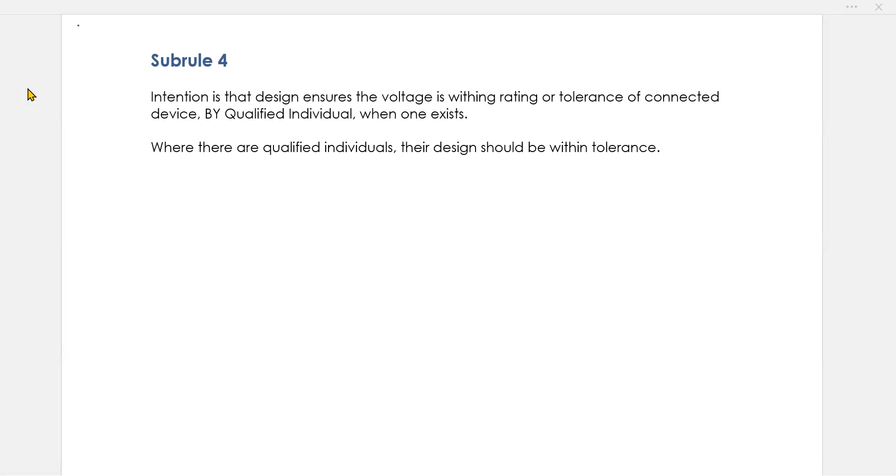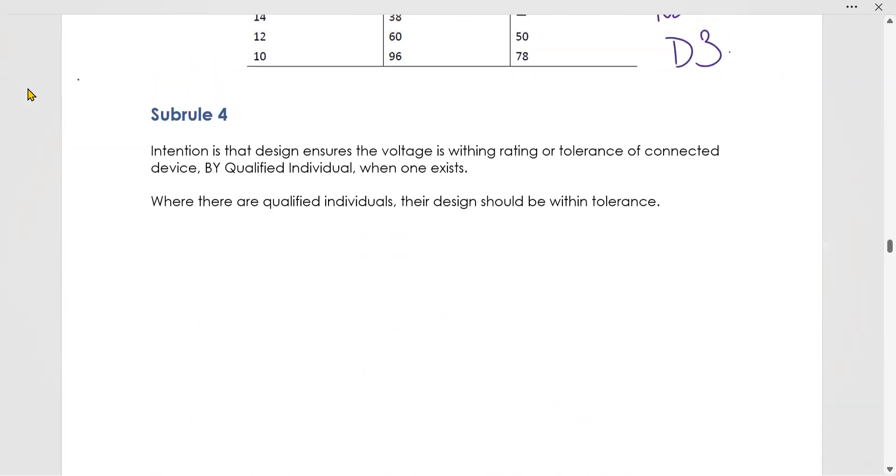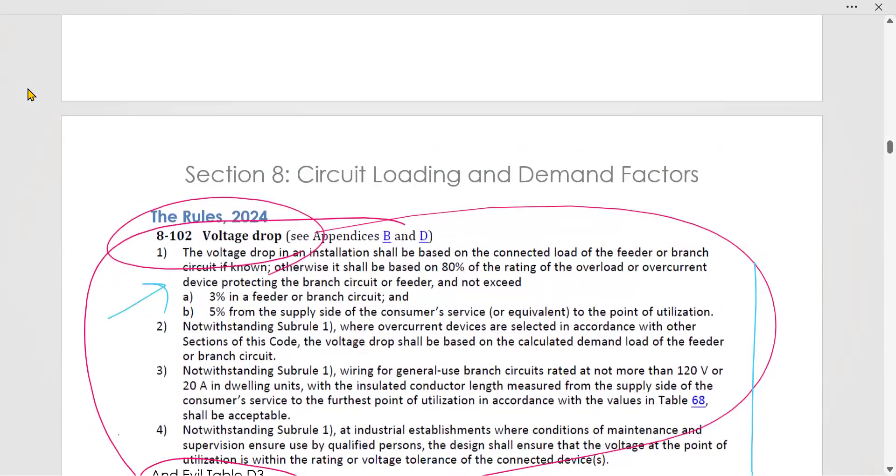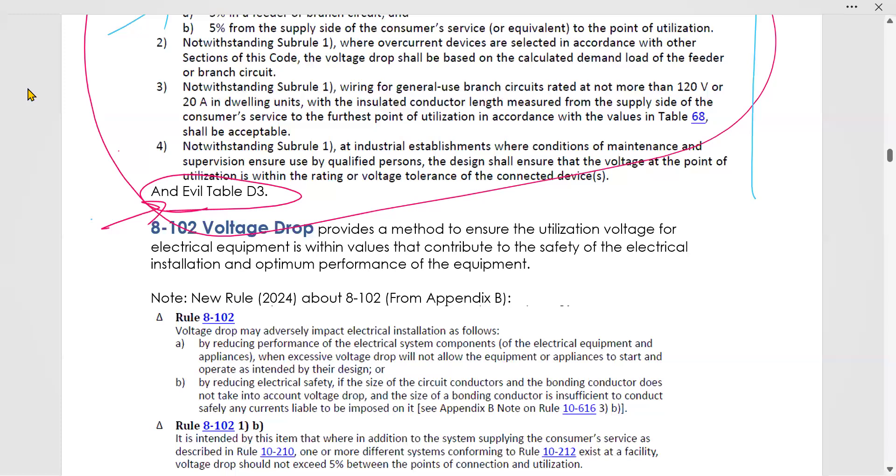Subsection, subrule 4 says that intention is that design ensures the voltages within rating or tolerance of connected device by a qualified individual when one exists. Where there are qualified individuals, their design should be within tolerance. So basically, subrule 4, let's see how it's actually worded in the rule. It says, notwithstanding subrule 1, at industrial establishments where conditions of maintenance and supervision ensure use by qualified persons, the device shall ensure that the voltages at the point of utilization is within the rating or voltage tolerance of the connected devices.